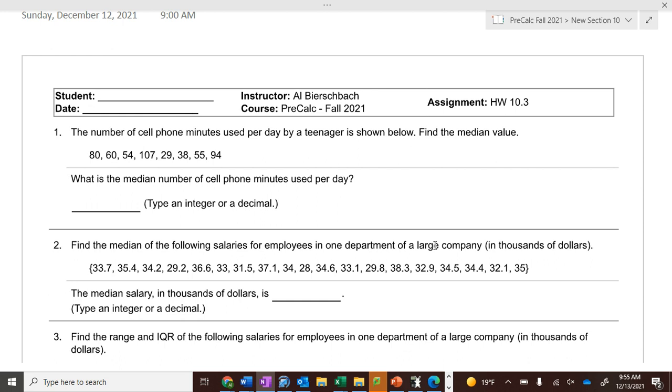On number one we have 80, 60, 54, 107, 29, 38, 55, and 94. That's eight numbers, so you take the middle two, 107 and 29, and average them, right? No, you don't. You have to put them in order from least to greatest.